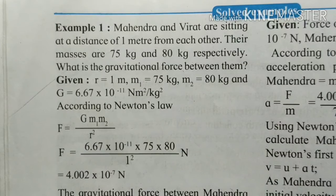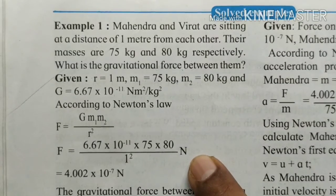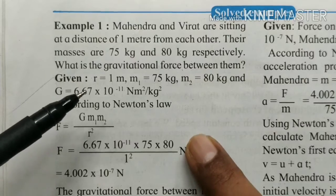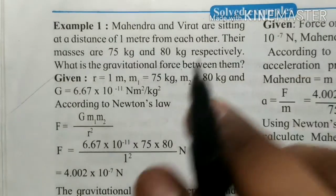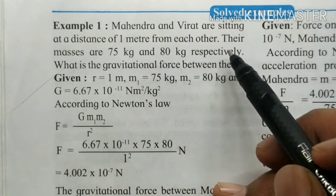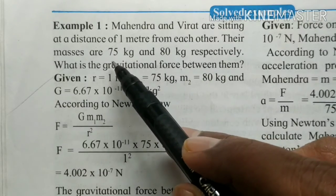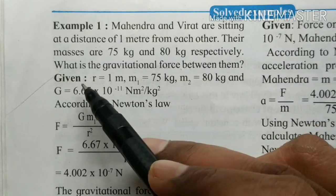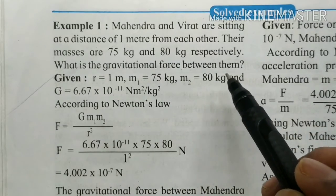Now let's consider an example. Mahindra and Virat are sitting at a distance of one meter from each other. Their masses are 75 kg and 80 kg respectively. What is the gravitational force between them?